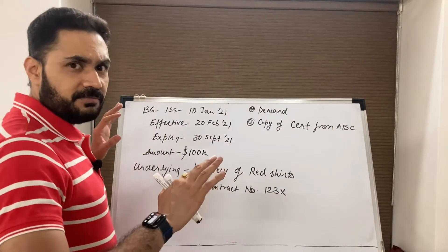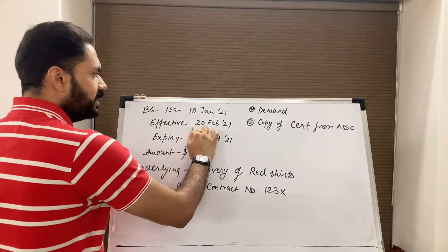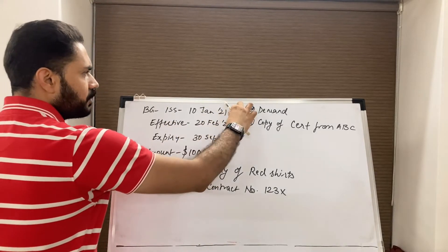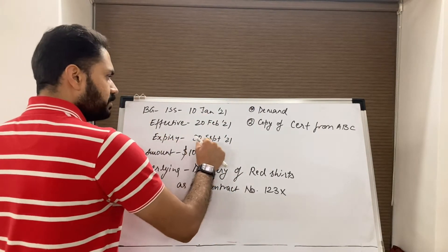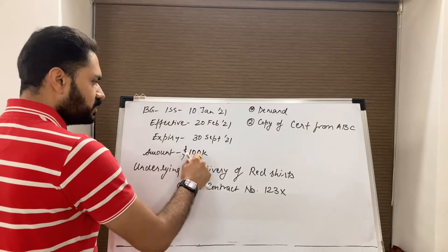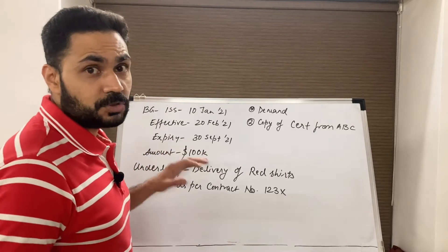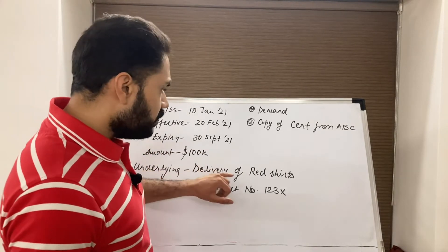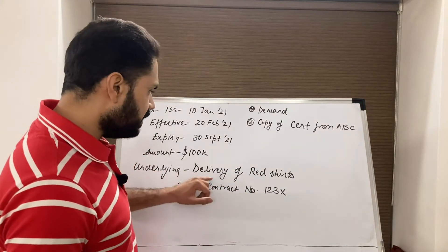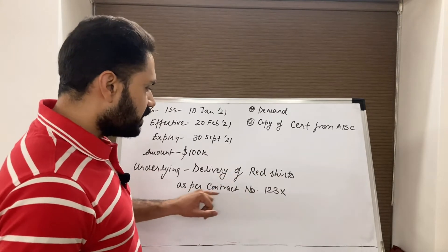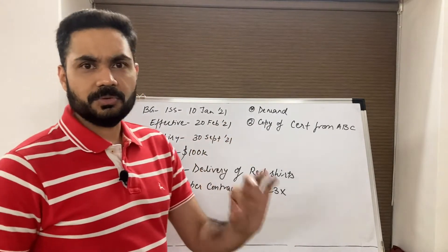We have an example: BG issuance date is 10th January, effective date is 20th February — so from 10th January till 19th February no demand can be presented. Expiry is 30th September 2021. Amount is 100,000. The underlying obligation is delivery of red shirts as per contract number 123X. The guarantee is subject to URDG.